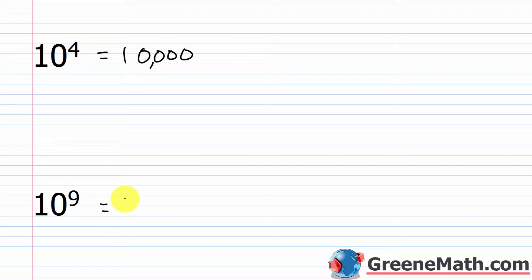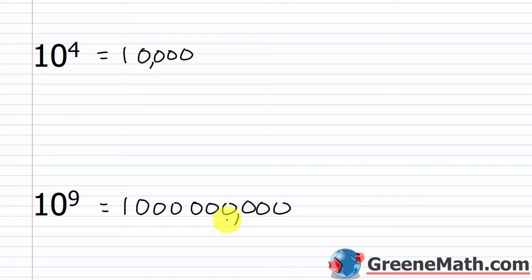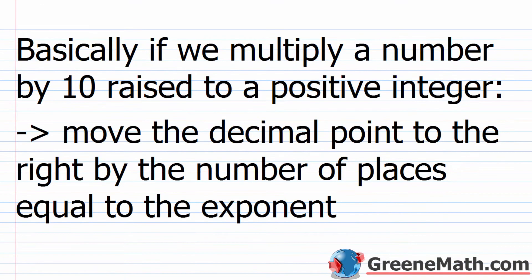10 to the 9th is a 1 followed by nine zeros — that's 1 billion. So if we multiply a number by 10 raised to a positive integer, we move the decimal point to the right by the number of places equal to the exponent.